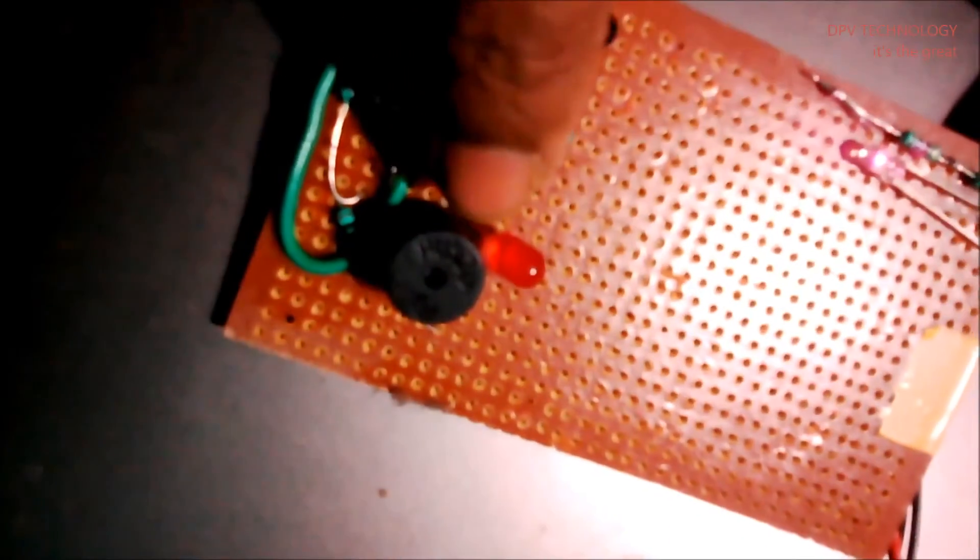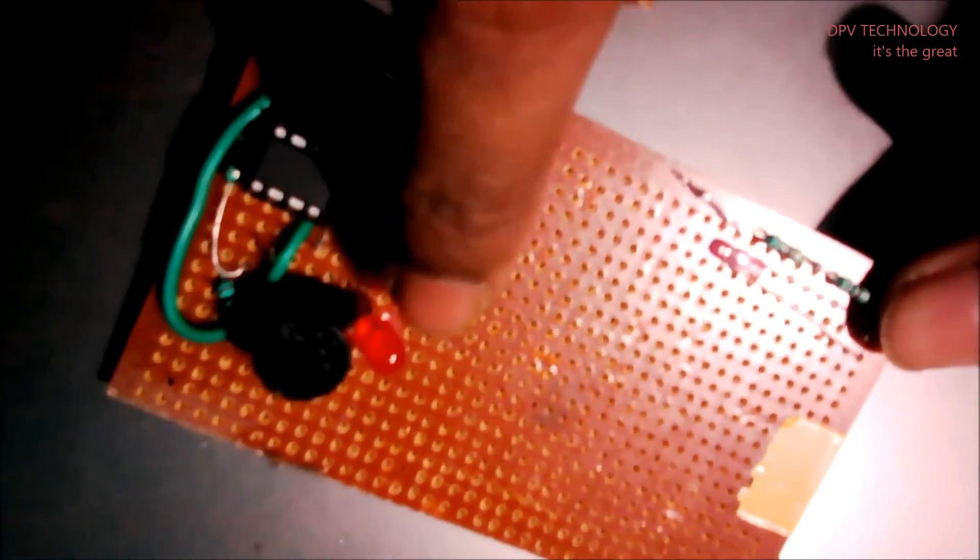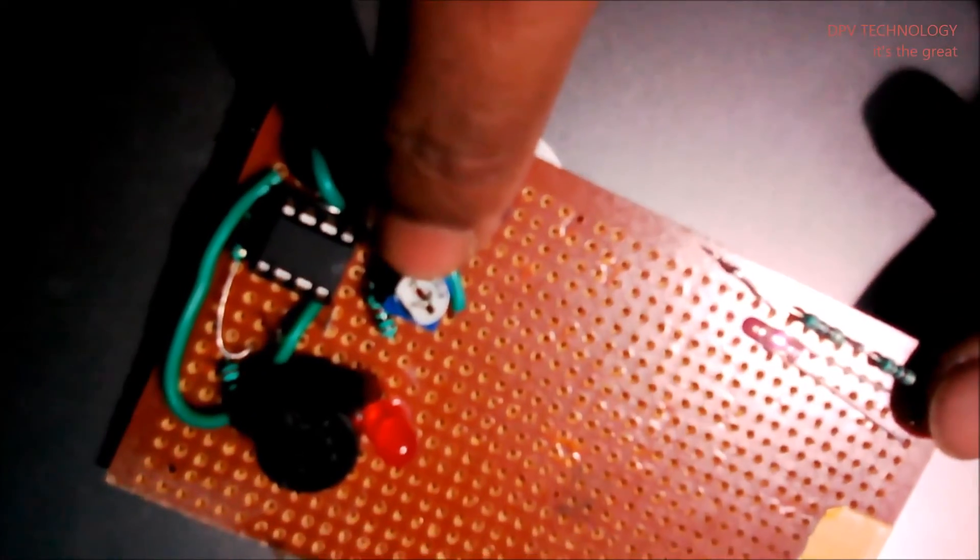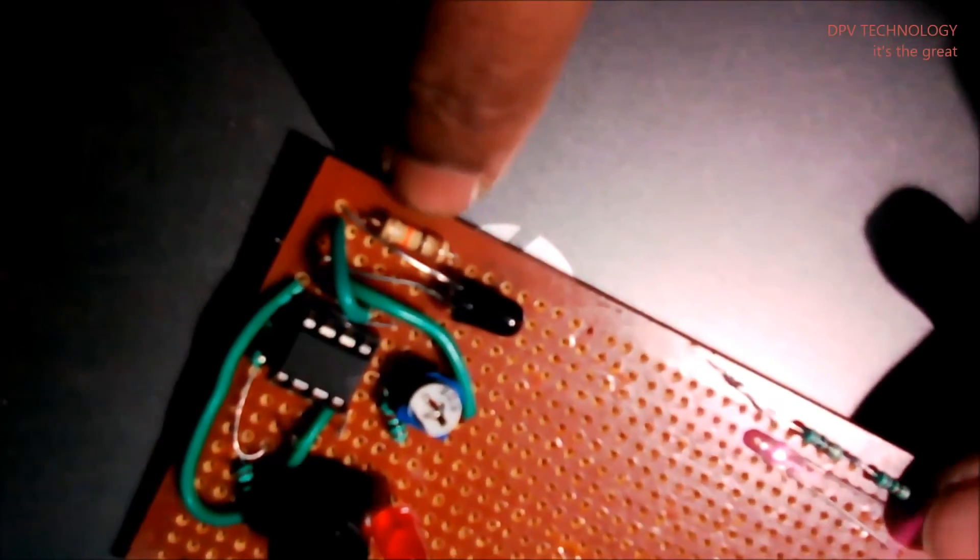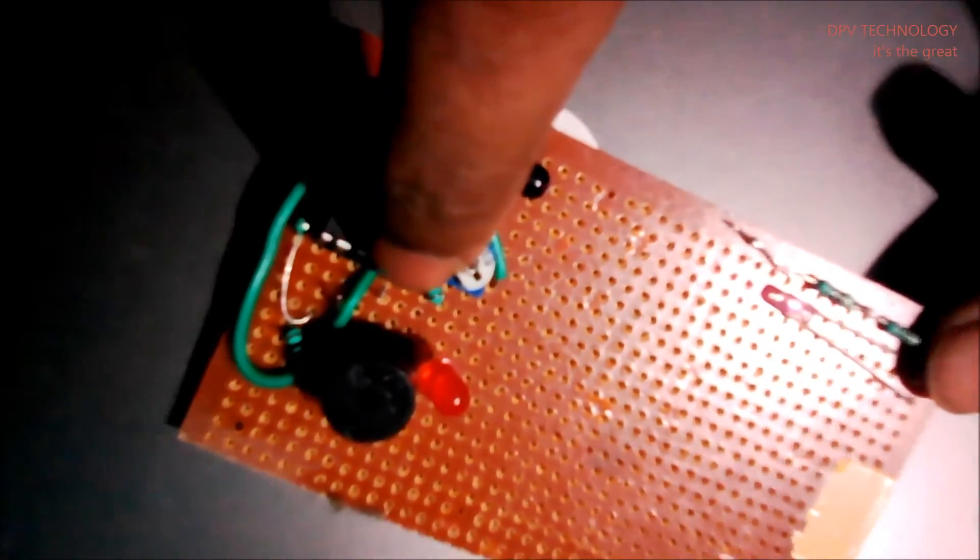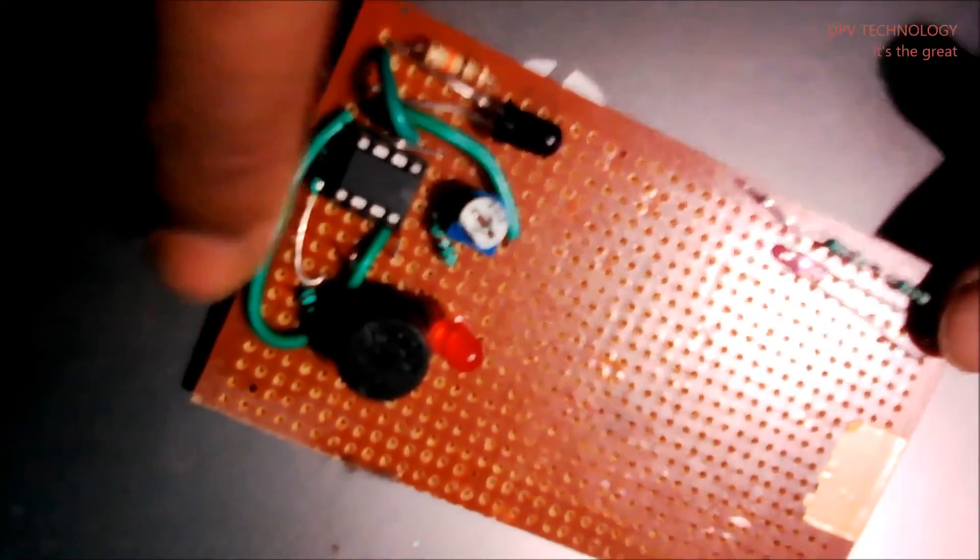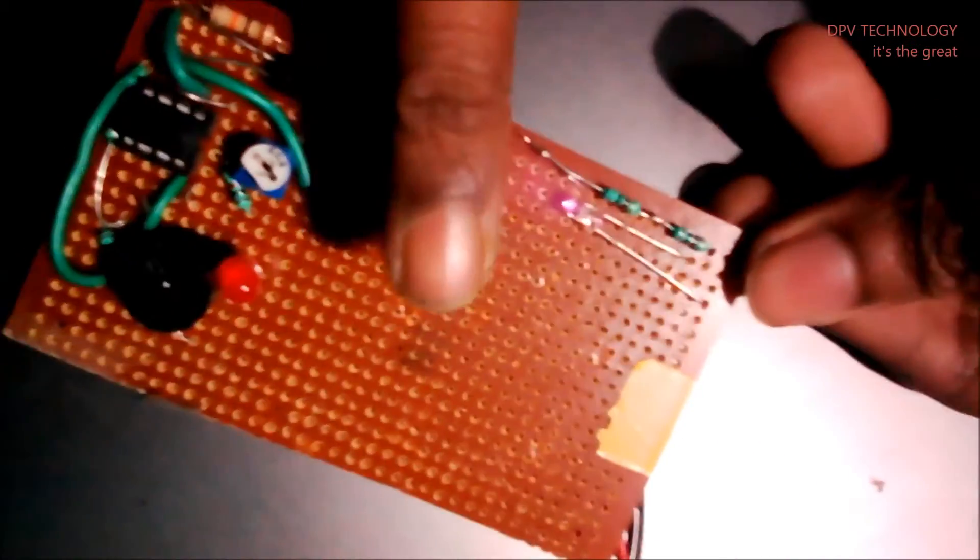You see this is the buzzer and this is one LED. This is the potentiometer, this is 10k resistance, and this is 100 ohm resistance. This one also has 10k resistance, this one also has 10k resistance.